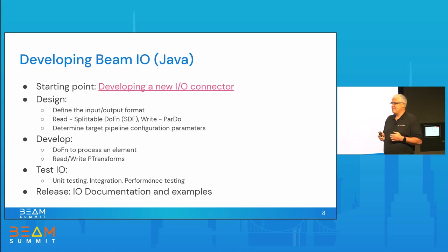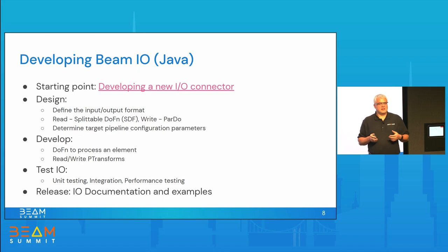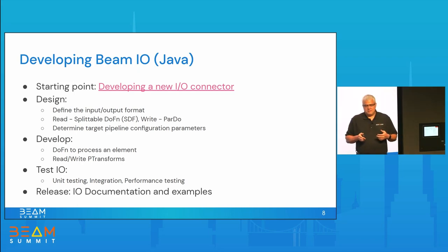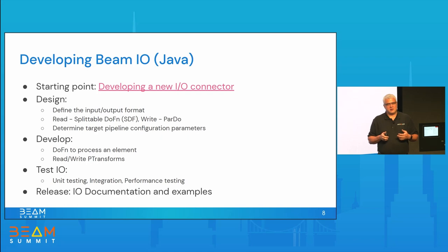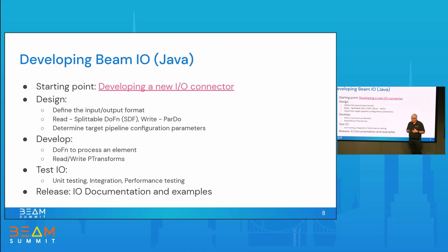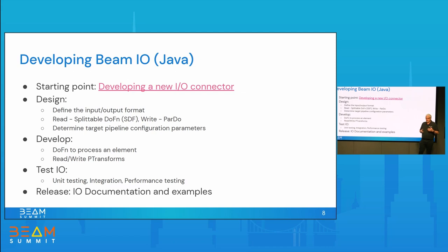Just to recap what was covered on Beam IOs: Beam IO is essentially a read and write transform to exchange data with external systems. They are designed to be efficient and scalable. Beam has built-in IOs that come with the SDK, and also external IOs maintained by other developers. Our journey started with checking Beam documentation, which contains a guide listing the main steps to develop an IO: design, development, testing, and release.